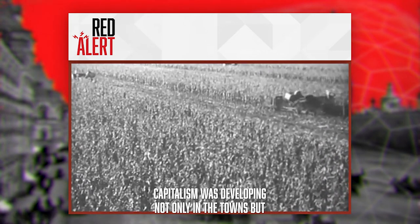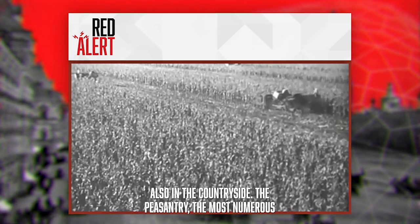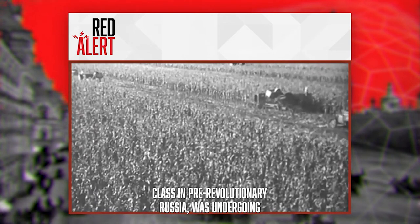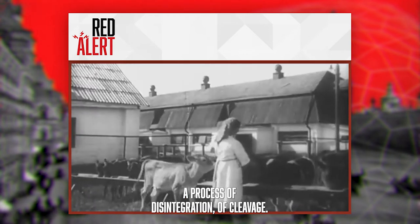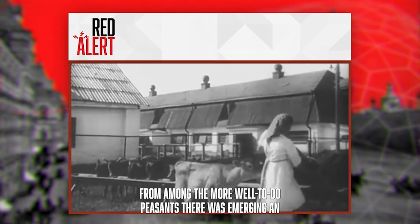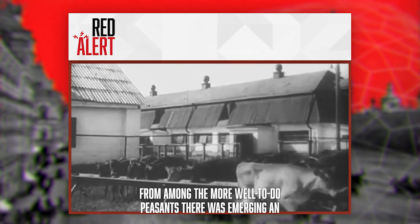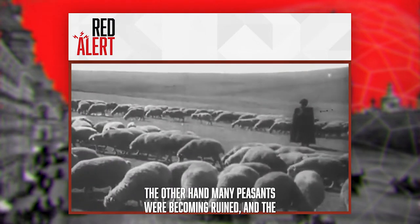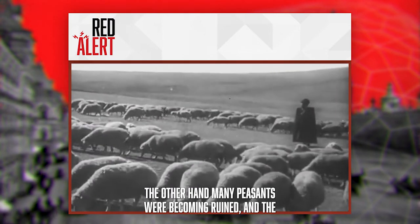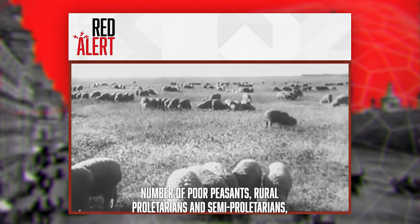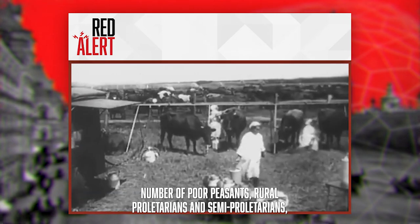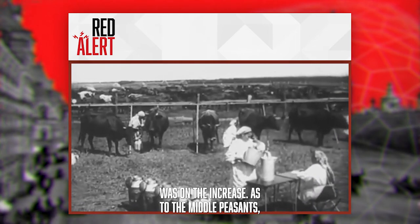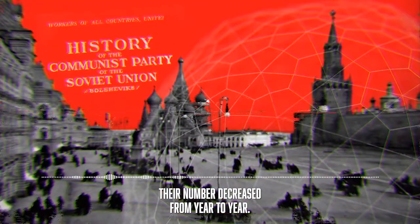Capitalism was developing not only in the towns, but also in the countryside. The peasantry, the most numerous class in pre-revolutionary Russia, was undergoing a process of disintegration, of cleavage. From among the more well-to-do peasants, there was emerging an upper layer of kulaks — the rural bourgeoisie — while on the other hand, many peasants were becoming ruined, and the number of poor peasants, rural proletarians and semi-proletarians, was on the increase. As to the middle peasants, their numbers decreased from year to year.